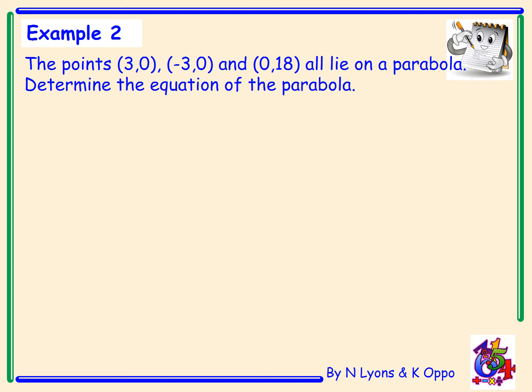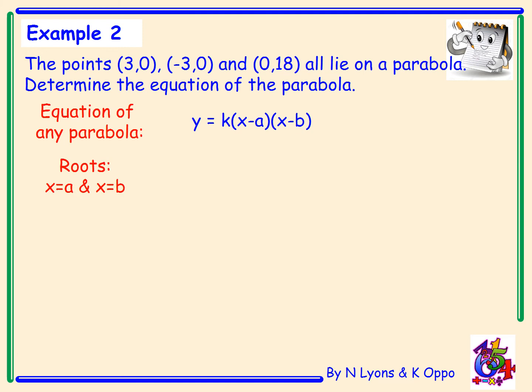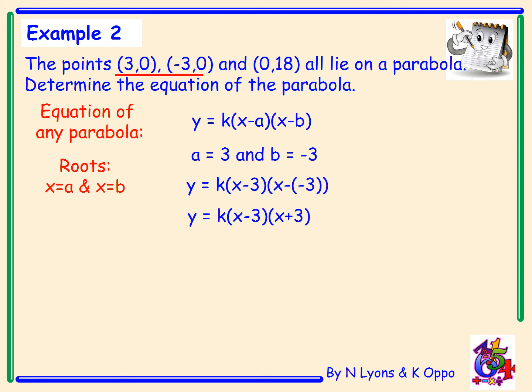The roots are where it cuts the x-axis: x equals 3 and x equals minus 3. Writing down the general form: y equals k times x minus a times x minus b, with the roots x equals a and x equals b. Substituting a equals 3 and b equals minus 3 gives y equals k times x minus 3 times x minus minus 3. Watch out for the double negative — that becomes y equals k times x minus 3 times x plus 3.